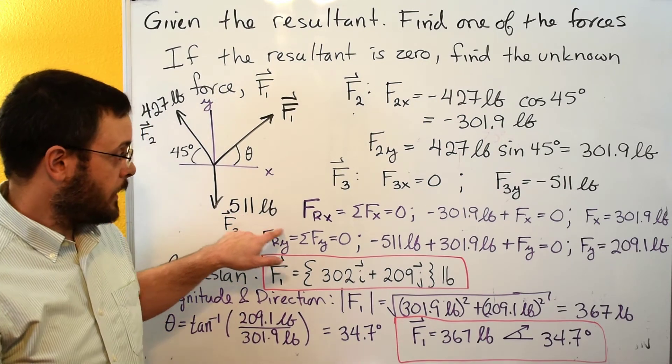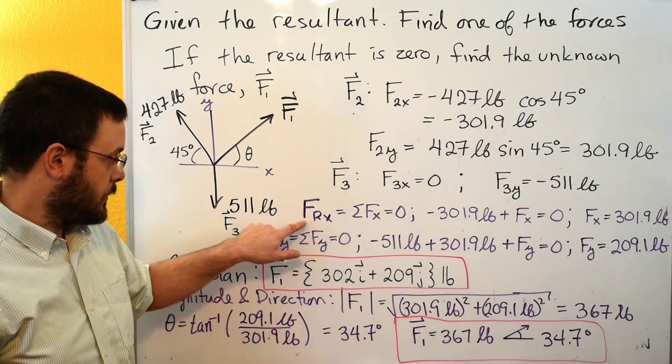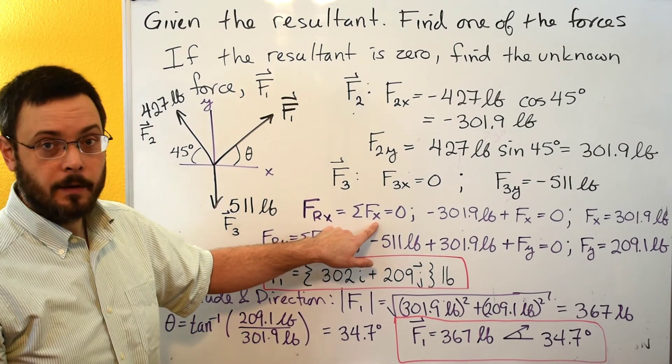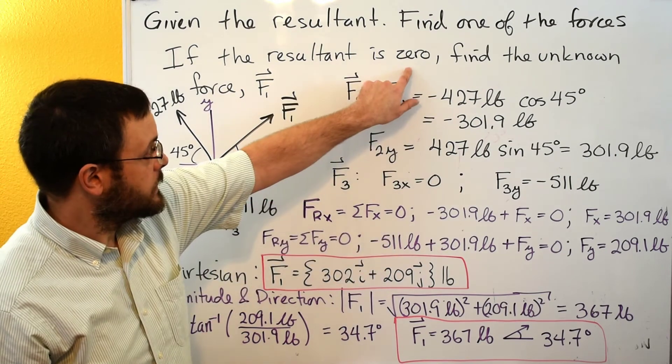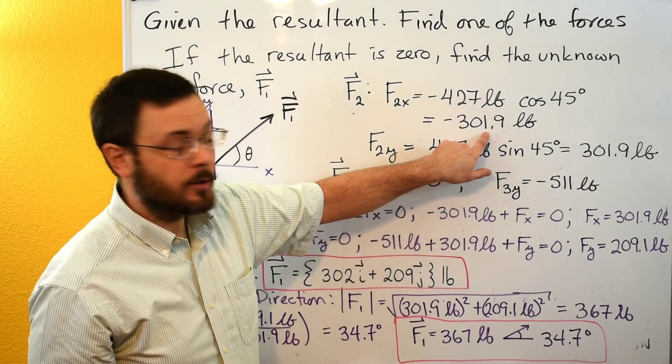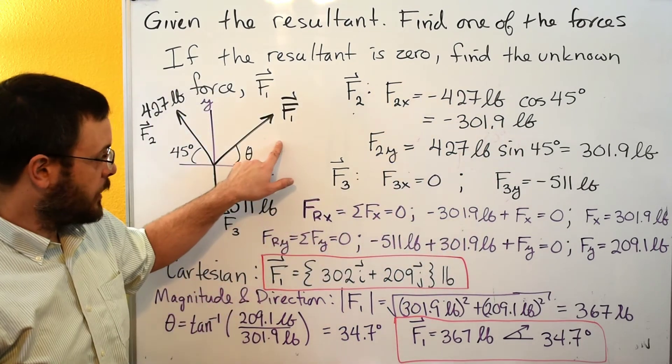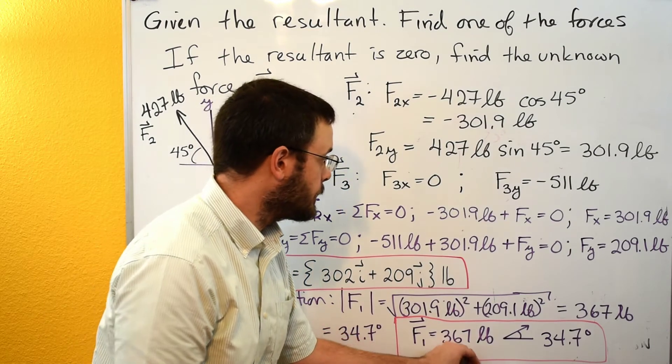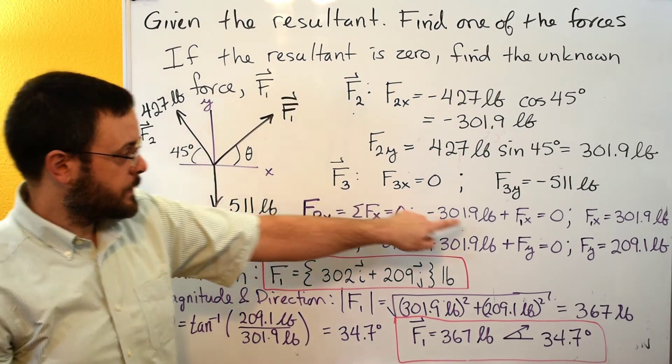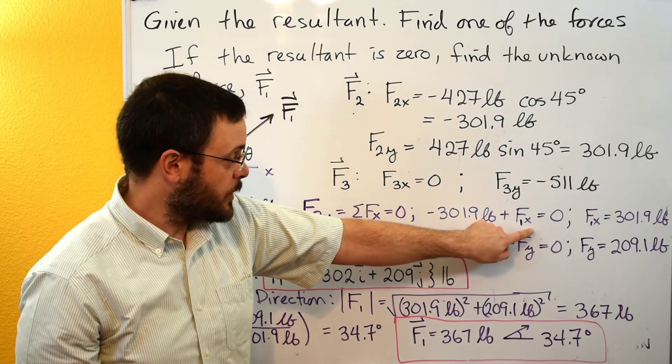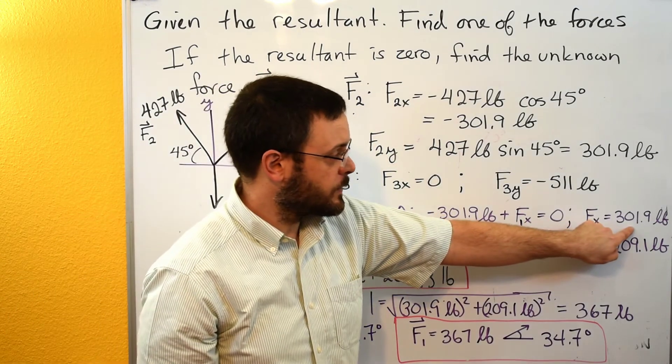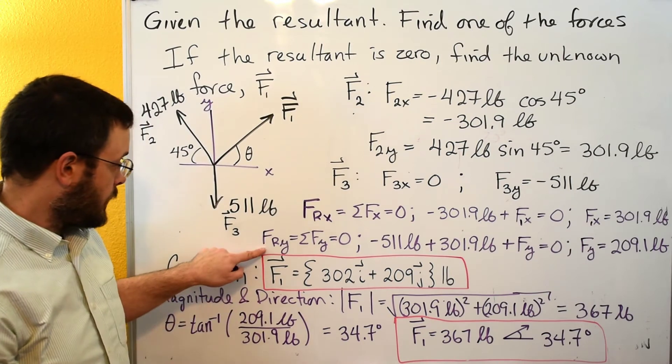Now we can sum up and get our resultant in x. Our resultant in x is equal to the summation sign. This just means add up everything in the x direction, and we know that has to be equal to zero for our resultant to be equal to zero. So everything in the x direction would be our negative 302, our F1x component, and nothing from here, so zero contribution from F3x. We can then solve this equation for F1x, so I have to add 302 to both sides and we'll get that F1x is equal to 302 pounds.